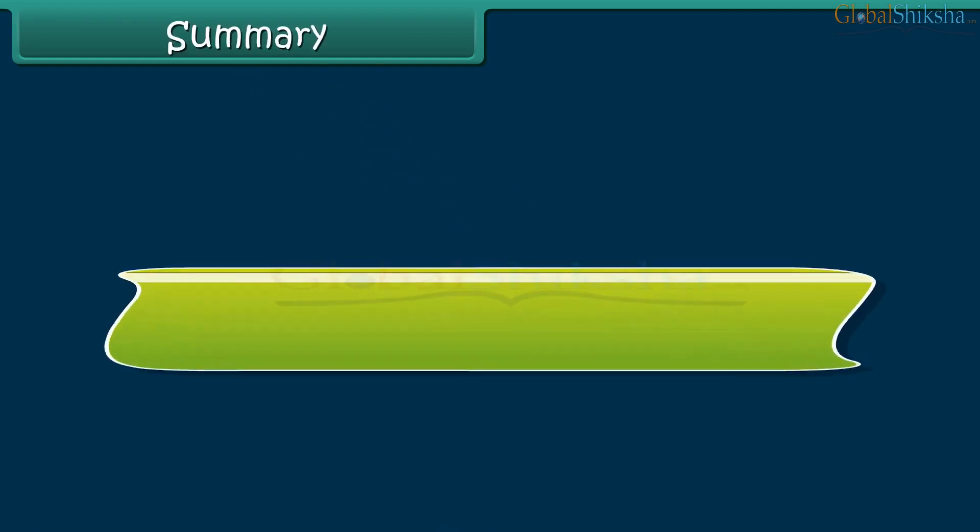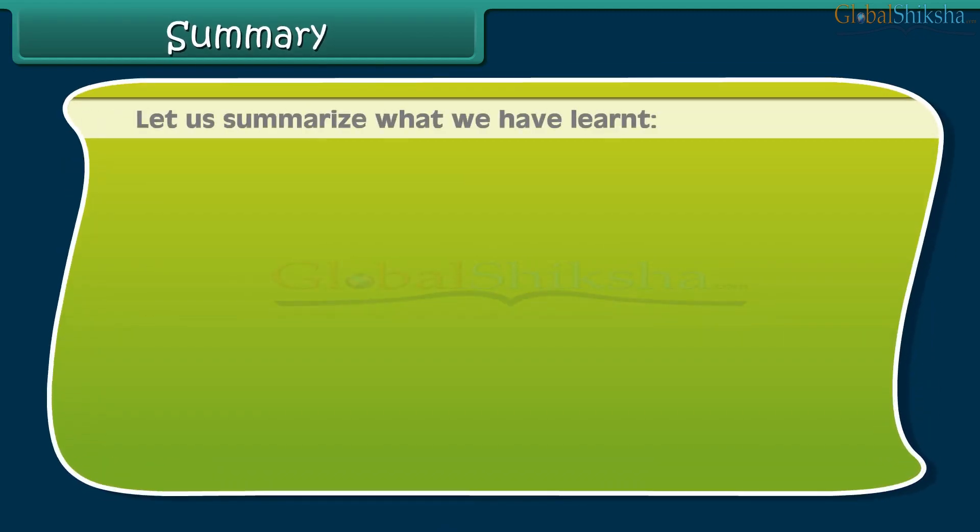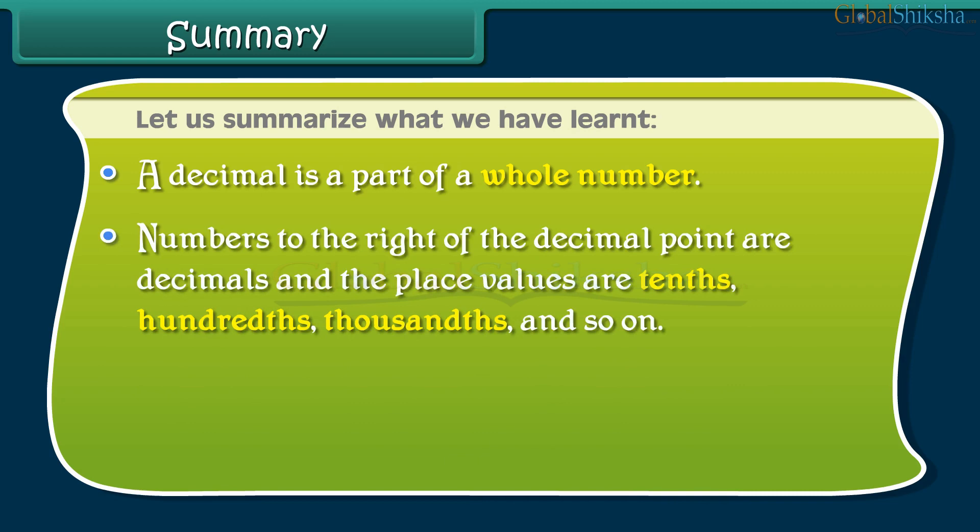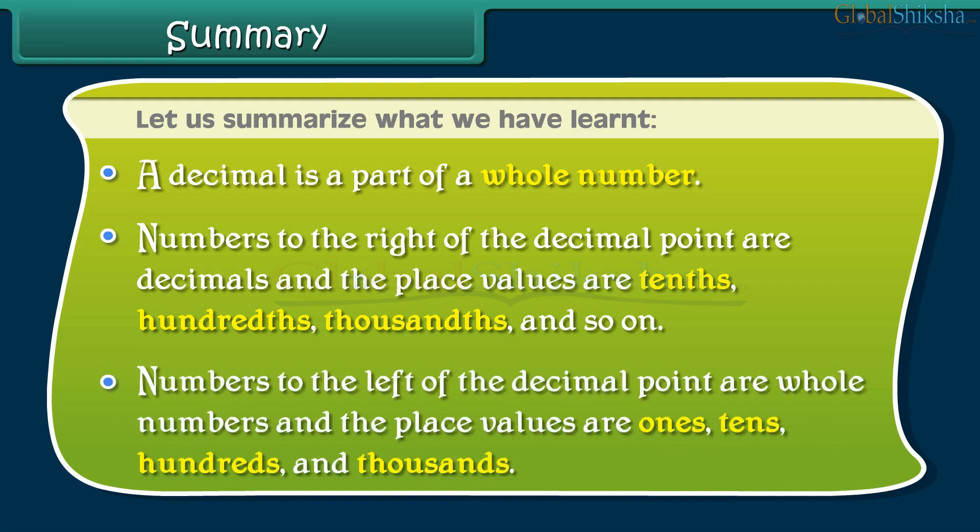Summary. Let us summarize what we have learnt. A decimal is a part of a whole number. Numbers to the right of the decimal point are decimals and the place values are tenths, hundredths, thousandths and so on. Numbers to the left of the decimal points are whole numbers and the place values are ones, tens, hundreds and thousands.